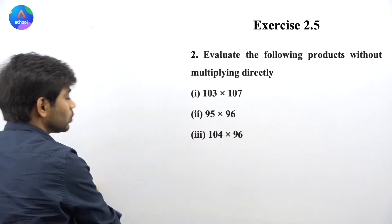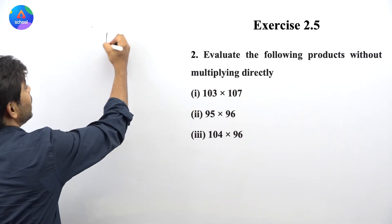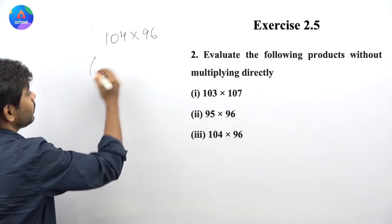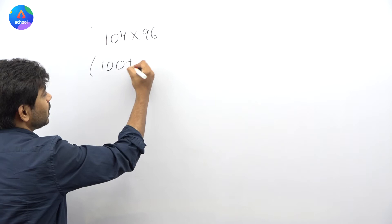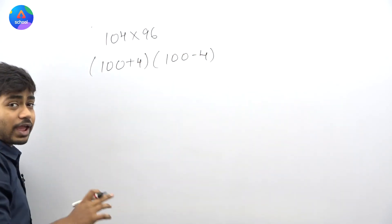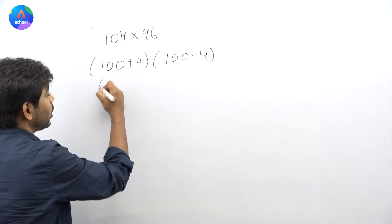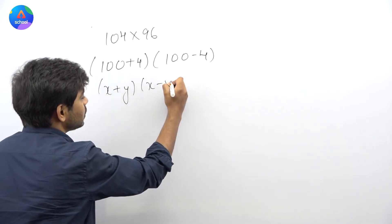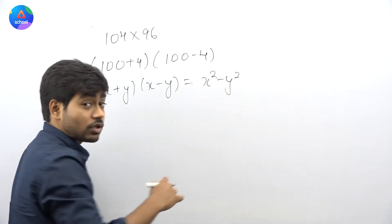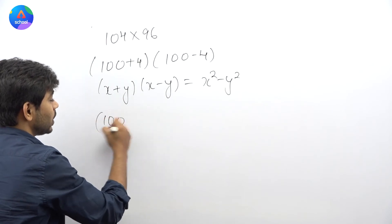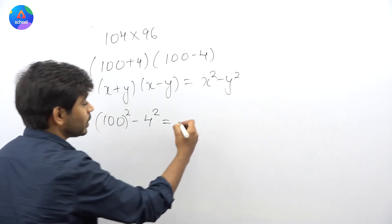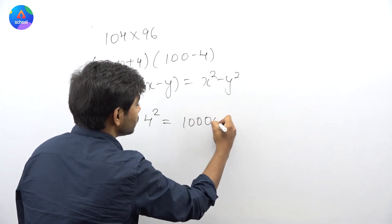अगले part में है 104 × 96। यहाँ पर देखिए क्या format बनेगा: 100 + 4 और 100 − 4। यानि कि यह (x+y)(x−y) का format बन गया। (x+y)(x−y) = x² − y²। तो यह हो जाएगा: 100² − 4² = 10,000 − 16।